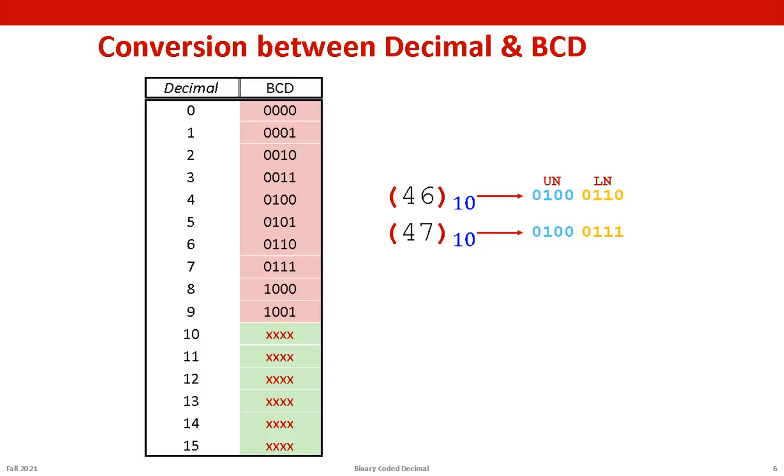And if we have a decimal number that has an extra digit for the hundreds location, then we have an extra four bits to represent the extra digit.